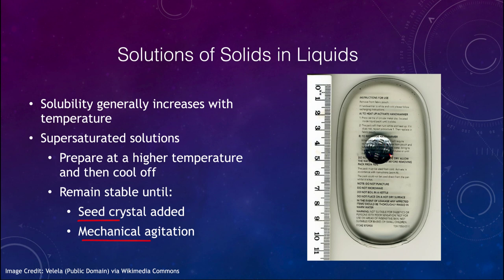A heat pack is a real-world example of a supersaturated solution. You press the small circle inside, which provides enough of a disturbance to start the crystallization process. Because it is supersaturated, the solution will begin to crystallize out material and generate heat — warming the hand warmer. It sits calm and stable until you give it that little kick to get it started.